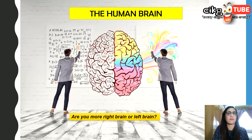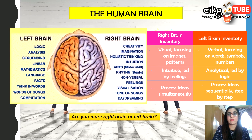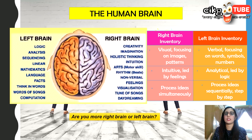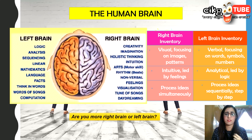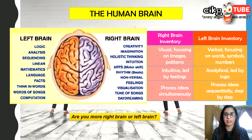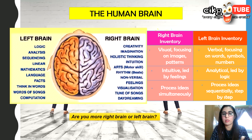Fun fact: do you know that the brain is made up of more than 100 billion neurons? The brain is the coordination and control center for humans. The right side of the brain is more towards creativity, imagination, feelings, arts, tune of songs, and daydreaming, whereas if you use your left brain, you are more of a logical person — you analyze things, sequence them, you're good at maths and language, and think in words. So it depends whether you are more of a left-brain or right-brain person.